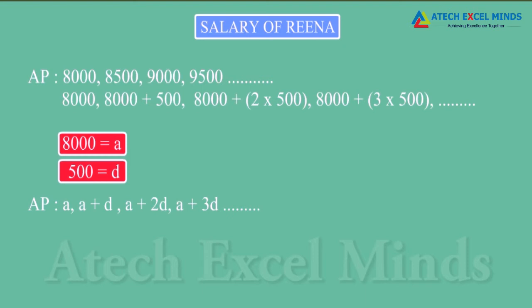If we assume 8,000 as A and 500 as D, then we can write this sequence as A, A plus D, A plus 2D, A plus 3D, and so on. This sequence is known as general form of an AP, where A is the first term and D is the common difference.